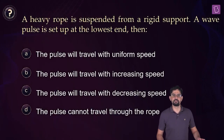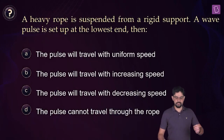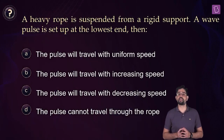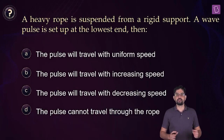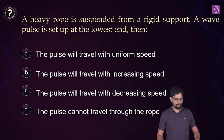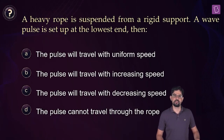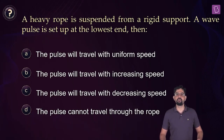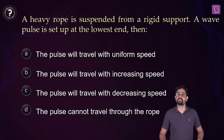According to this problem, a heavy rope is suspended from a rigid support. A wave pulse is set up at the lower most point. You have to tell, as the wave travels up the rope, what happens to its wave speed.